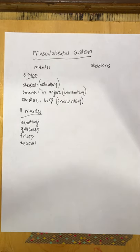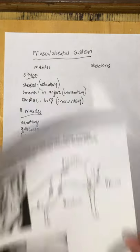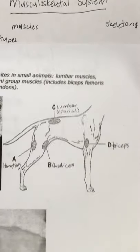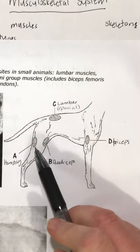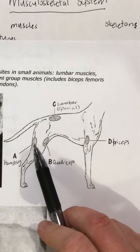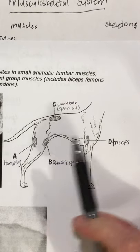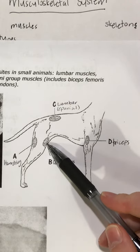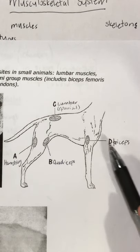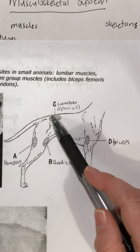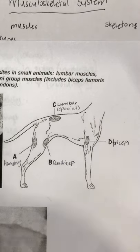I have a little diagram here. It shows you where all those muscles are. The hamstrings are in the hind part of the hind leg, right above the stifle. The quadriceps are at the front. In the foreleg we have the triceps, above the elbow. And in the back area, right above the hip, we have the lumbar muscles or the apaxial muscles.